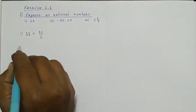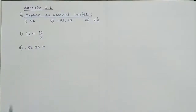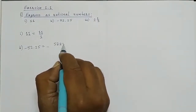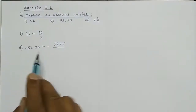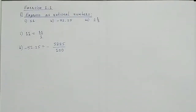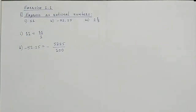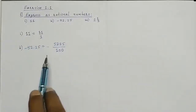Second sum: minus 52.25. We put the minus sign as it is. 52.25 means 5225 upon 100, since there are two digits after the decimal, so we put two zeros after 1. This is in the form integer upon integer. Further, if we want, we can write it in standard form, but since the question just says express as rational number, this answer is okay.